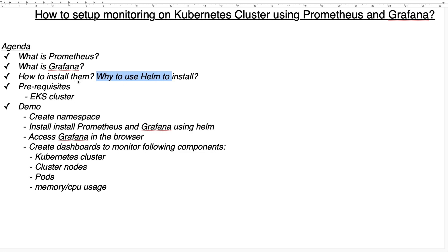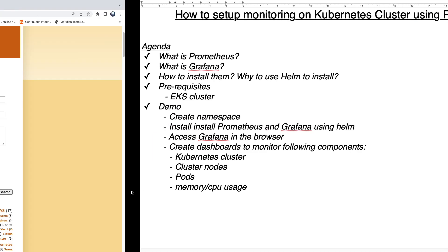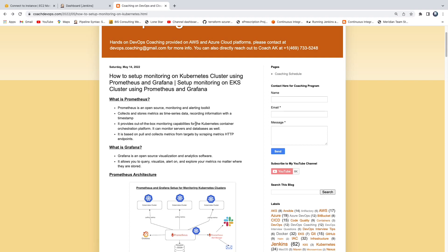We'll cover the prerequisites for setting up Prometheus — for example, we need to have a cluster set up. Then we'll get into the demo part. In the demo, we'll create a namespace, install both Prometheus and Grafana using a Helm chart, access Grafana in the browser, and create dashboards to monitor our Kubernetes cluster including nodes, pods, memory, and CPU usage.